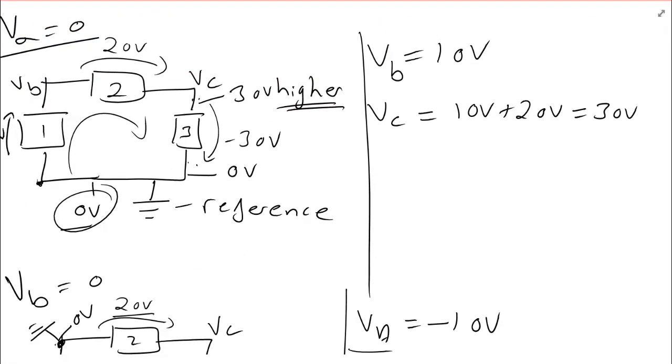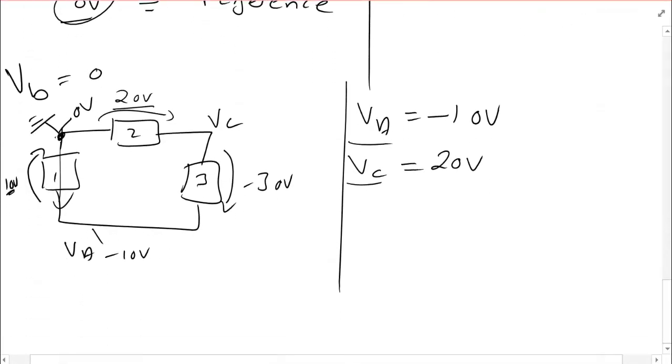So, this is in agreement with what we've just done above. When VA was my reference, I got a 30 volt difference between VA and VC. However, in this case, the number I write down for VC is 20 volts because all of this is with respect to VB being zero, not VA. That's the slightly confusing part about this.